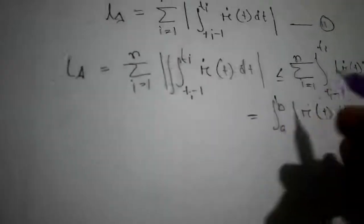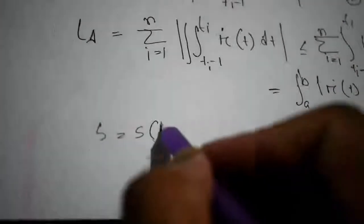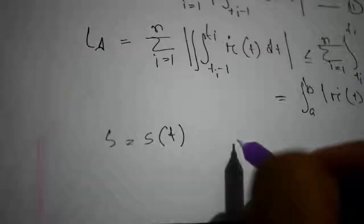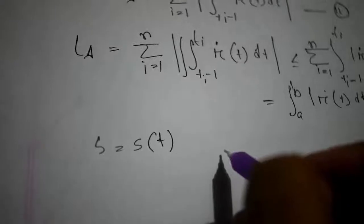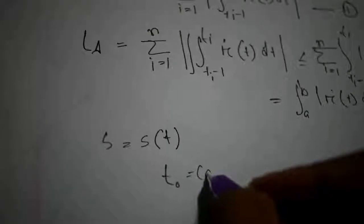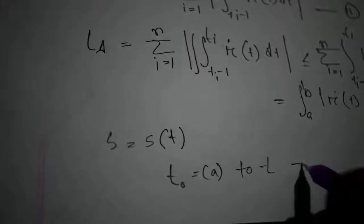Now let s equal to s(t) denote the arc length from a to any point t. Then the arc length from t₀ equal to a to t will be s(t, t₀).